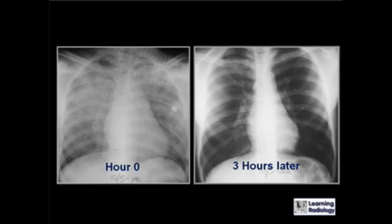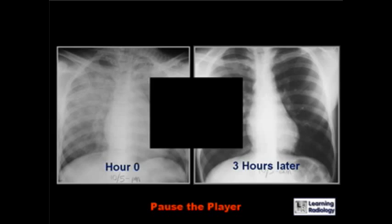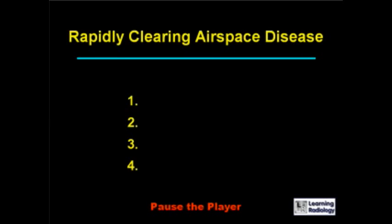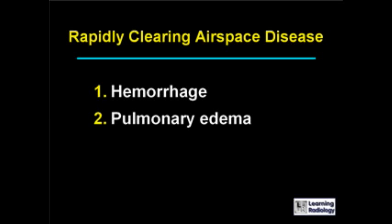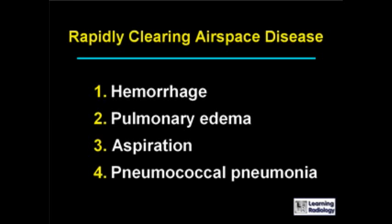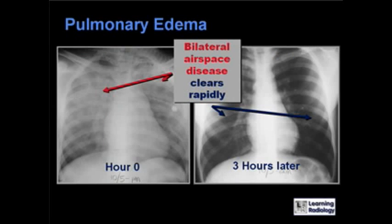The next differential is rapidly clearing airspace disease. There are four causes: hemorrhage, pulmonary edema, aspiration, and pneumococcal pneumonia.